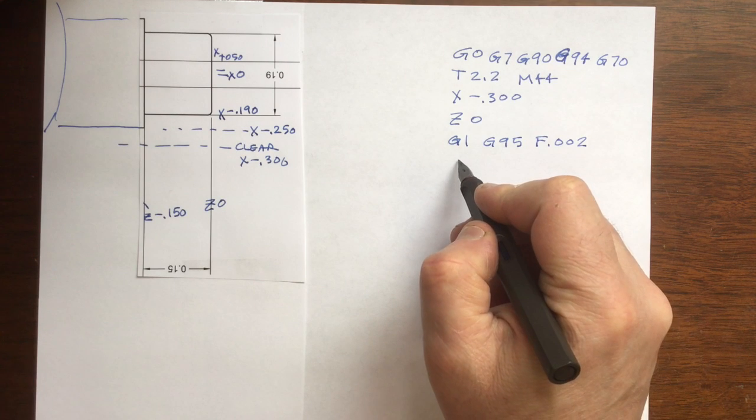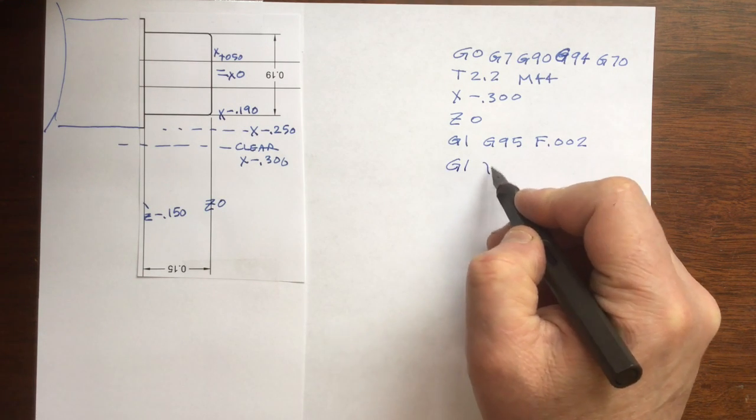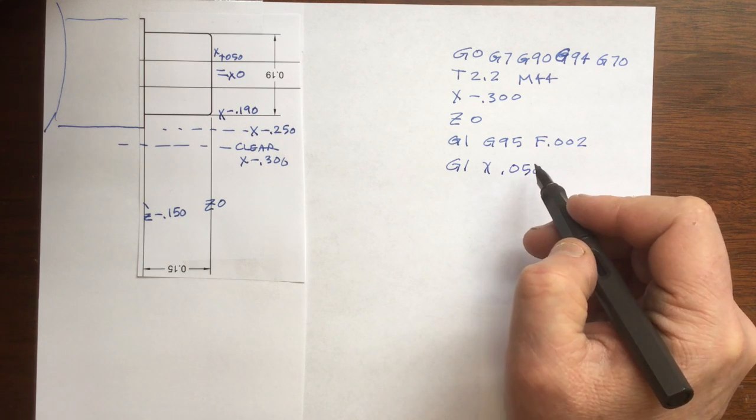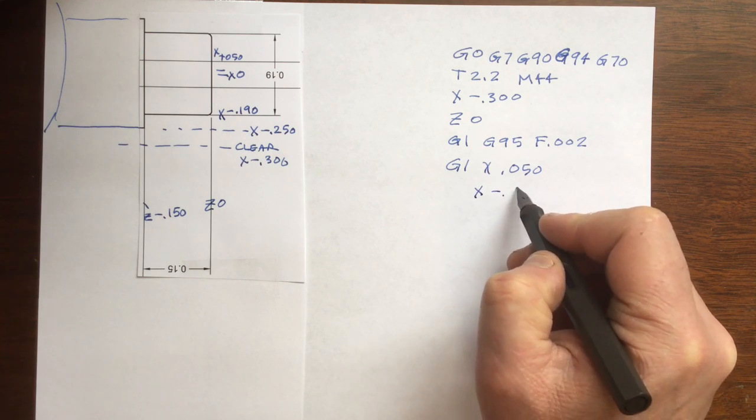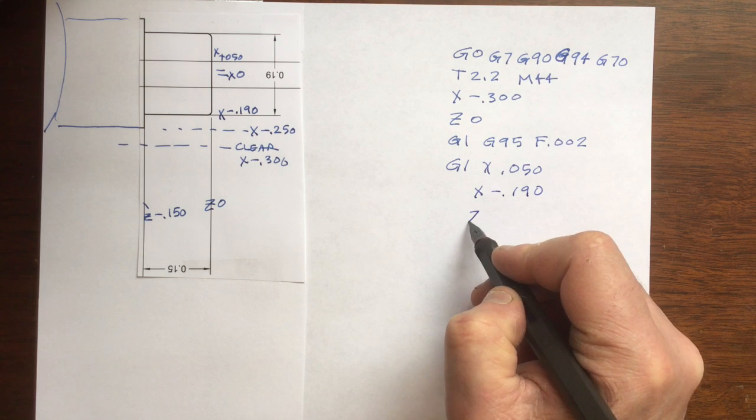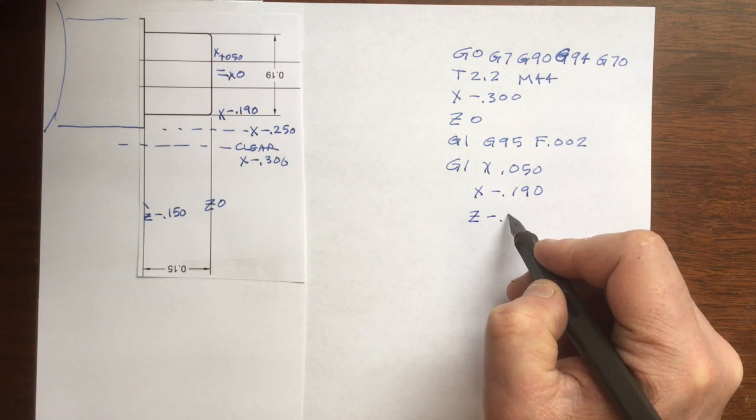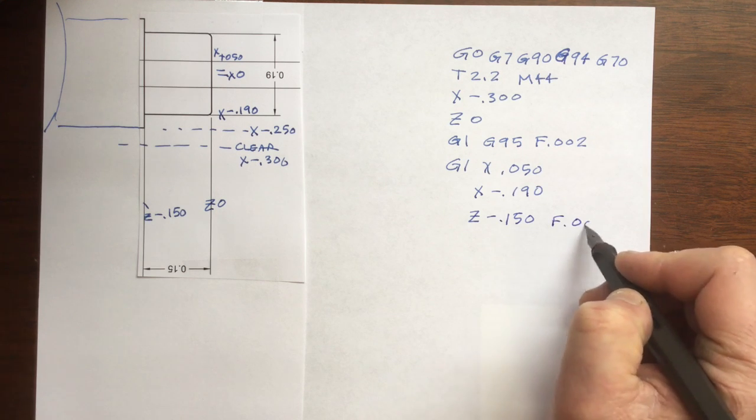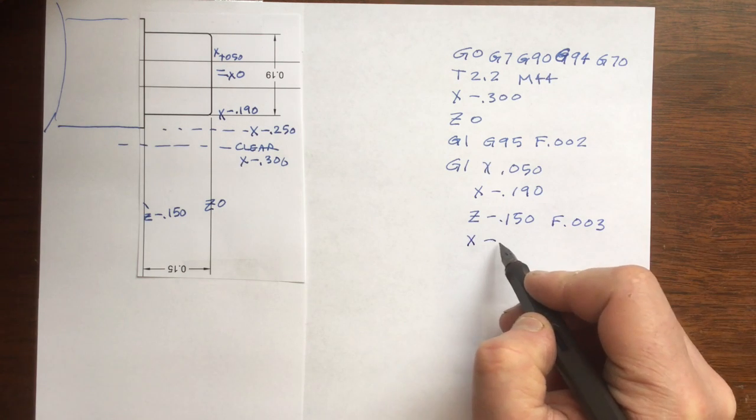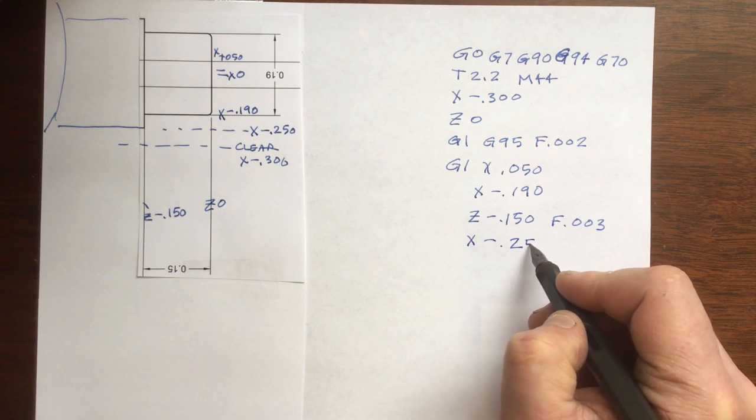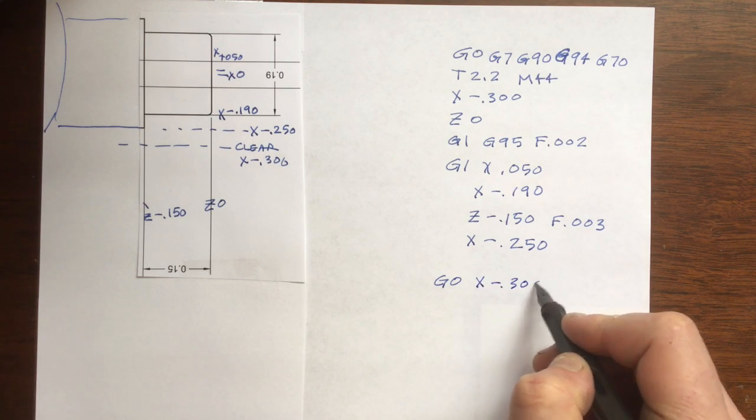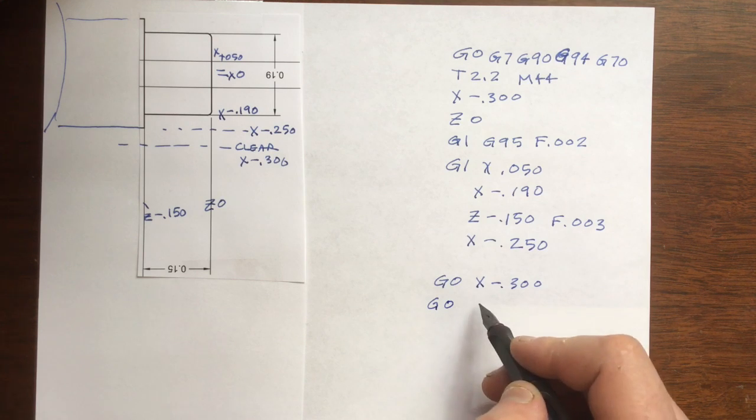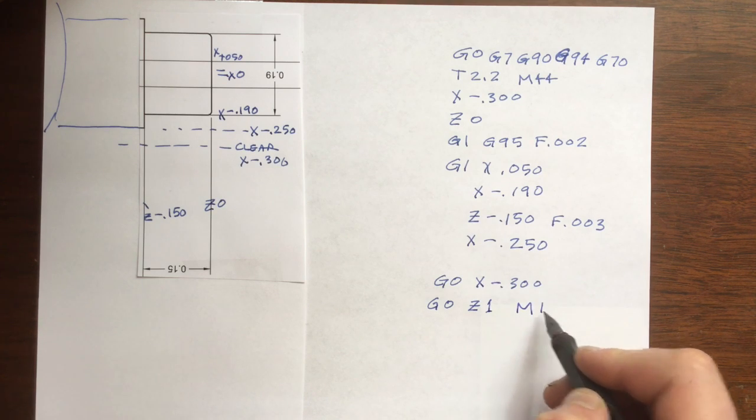Here are the preparatory codes to rapid the tool to X minus 300 and Z zero. I've chosen a feed rate of 2 thousandths per rev. Now I'm going to face the part to 50 thousandths of an inch to the other side of the centerline. Feed right back up to X minus 190, then feed Z minus 150. I'm changing the feed rate to 3 thousandths per rev. Now feed up to the stock diameter of X minus 250. Now rapid off the part to the clear place of X minus 300, and then rapid to Z one inch in front of the part, and M1 for the optional stop.